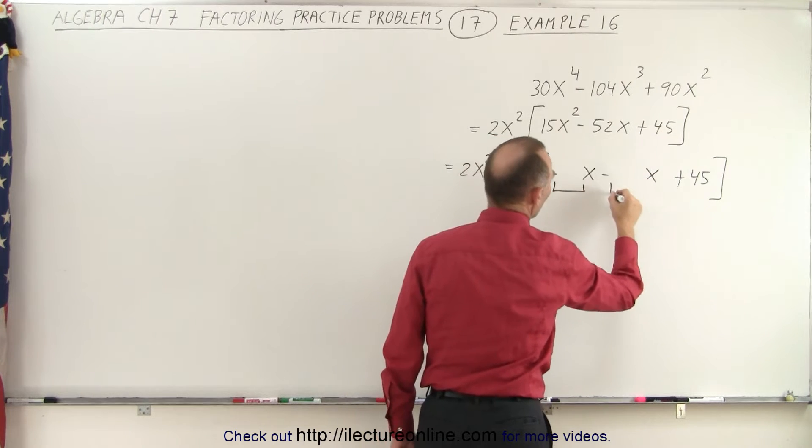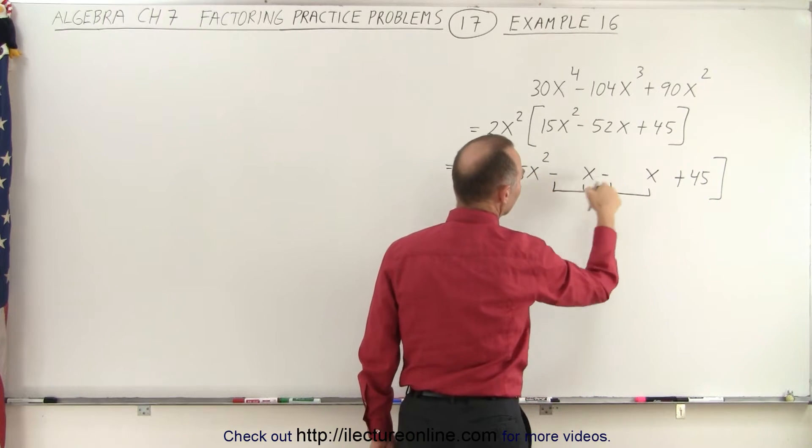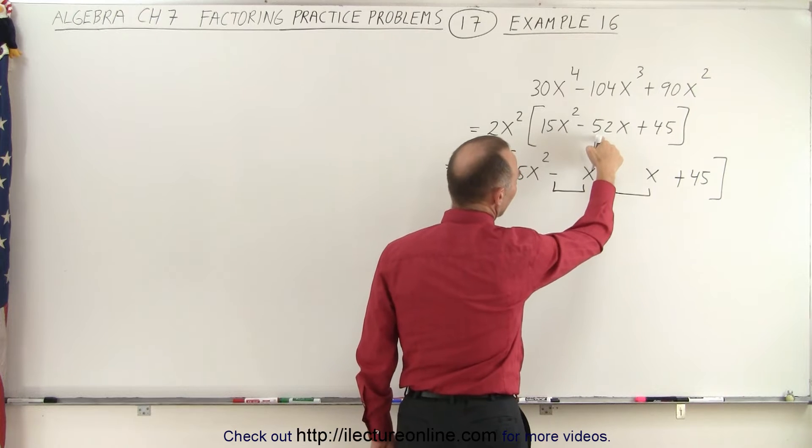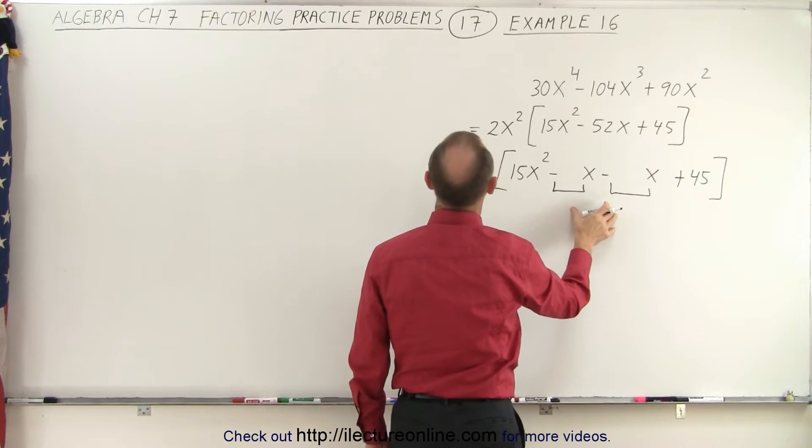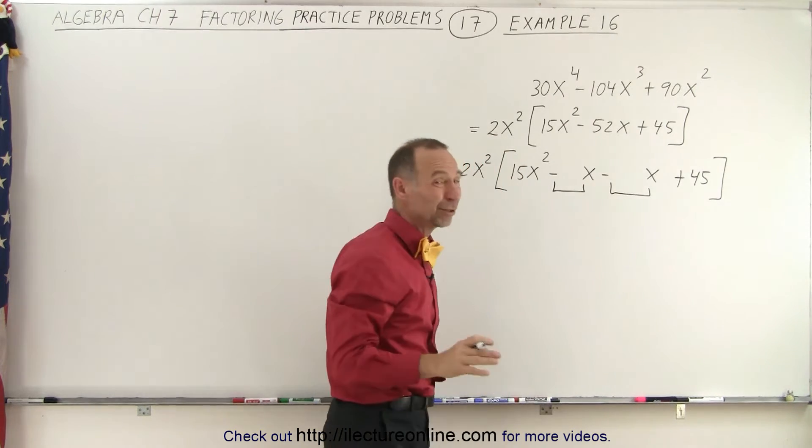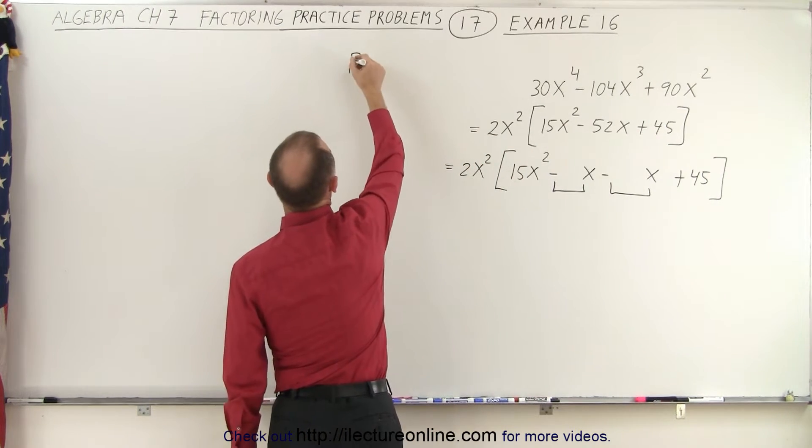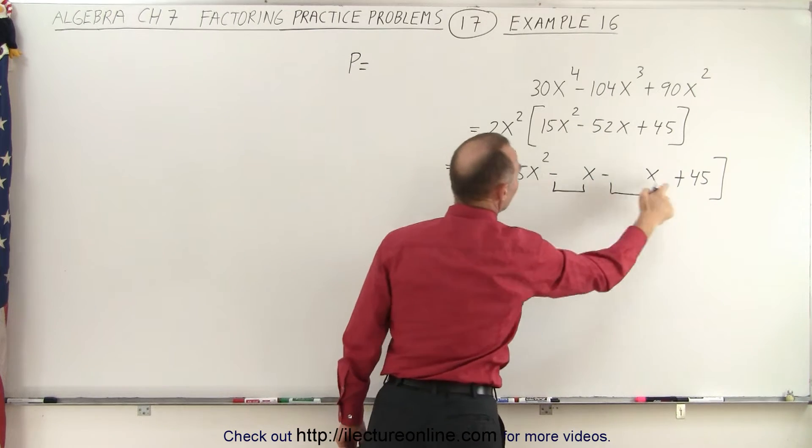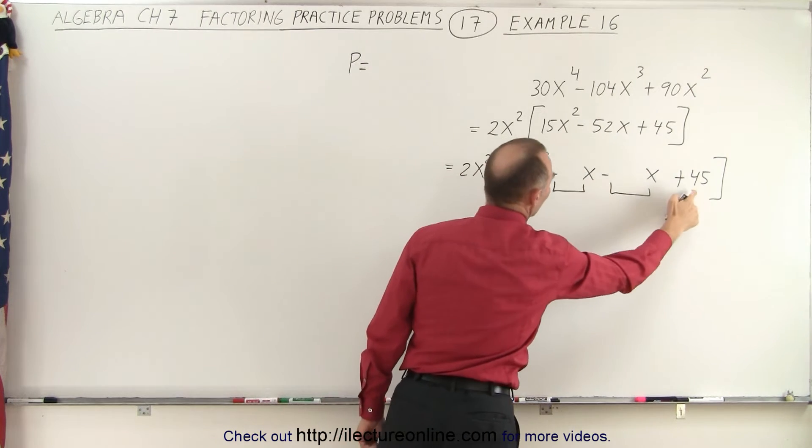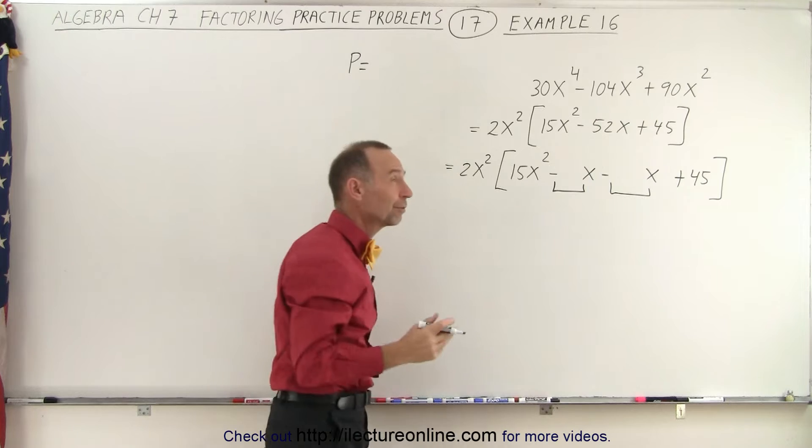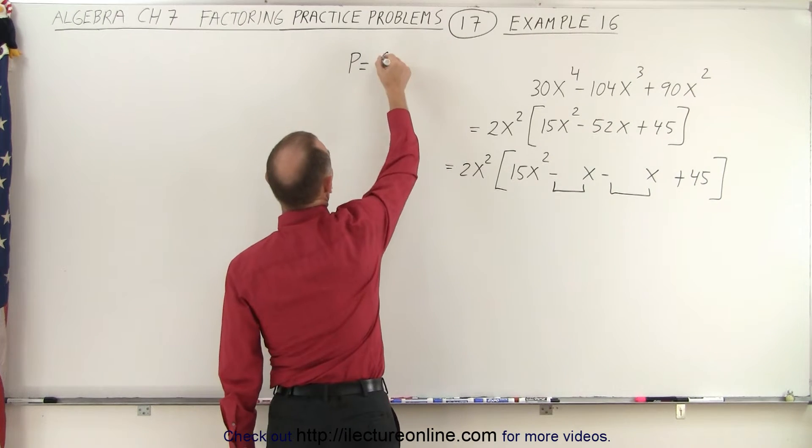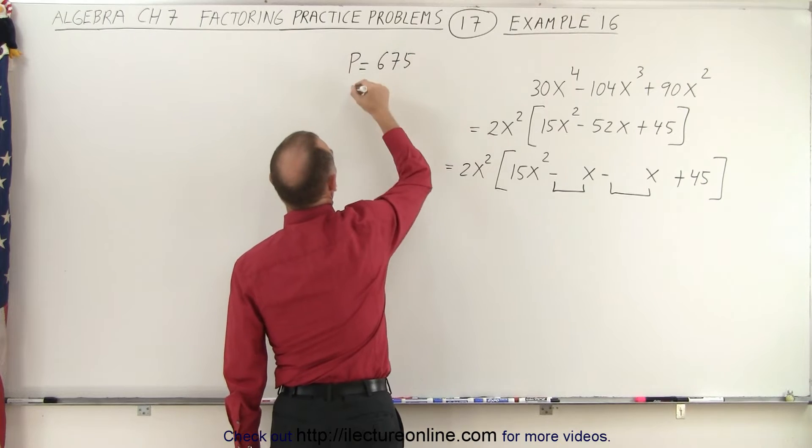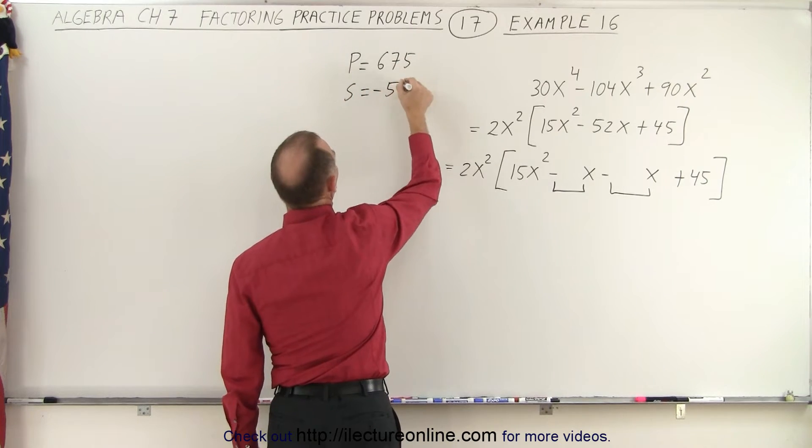And we're looking for two numbers. When we add them together, and they're two negative numbers, when we add them together we get minus 52. And when we multiply them together, the product of the two numbers is equal to the product of these two together. 15 times 45, well, 10 times 45 is 450. 5 times that is 225. That would be 675. And the sum must equal minus 52.